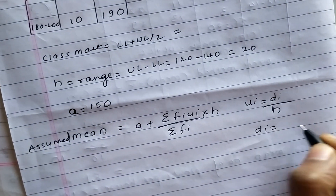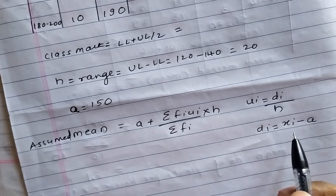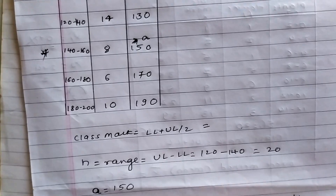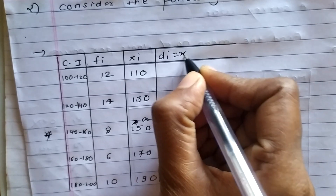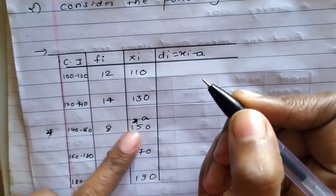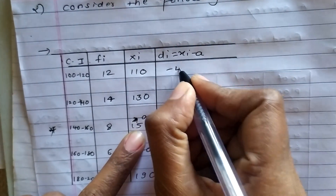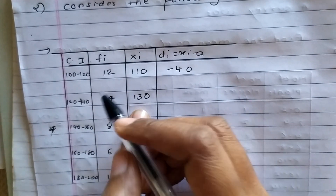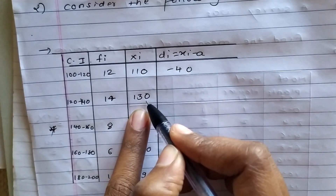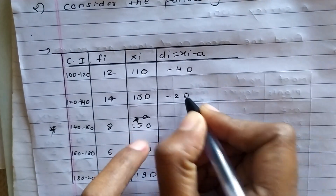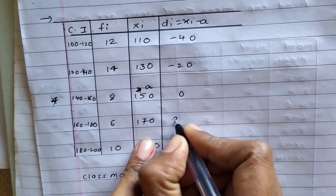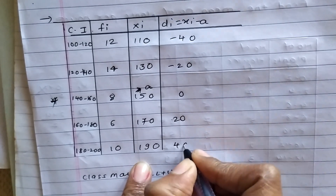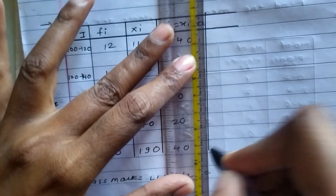DI equals XI minus A. So: 110 minus 150 gives minus 40; 130 minus 150 gives minus 20; 150 minus 150 gives 0; 170 minus 150 gives 20; and 190 minus 150 gives plus 40. These are our DI values.